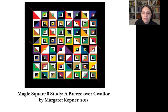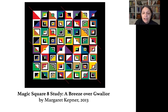This quilt-like print by Margaret Kepner is based on the magic square. The numbers are depicted visually using two number systems, one in color and the other in black and white.